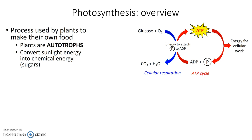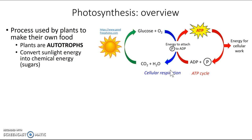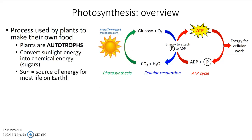These two cycles go together, but it begs the question: where does glucose come from in the first place? That's where photosynthesis comes in. Photosynthesis is the process in which plants use sunlight energy to create glucose and provide the energy to run cellular respiration and therefore the ATP cycle. Because if photosynthesis is providing the glucose, that means the Sun is the source of energy for almost every life form on Earth.